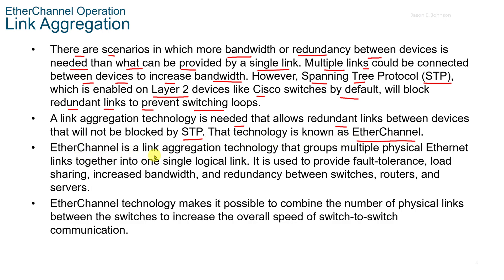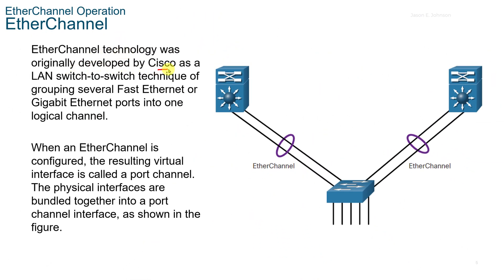An EtherChannel is a link aggregation technology that groups multiple physical Ethernet links together into one single logical link. It's used to provide fault tolerance, load sharing, increased bandwidth, and redundancy between switches, routers, and servers. EtherChannel technology makes it possible to combine the number of physical links between switches to increase the overall speed of switch-to-switch communication. EtherChannel was originally developed by Cisco as a LAN switch-to-switch technique of grouping several fast Ethernet or gigabit Ethernet ports into one logical channel.